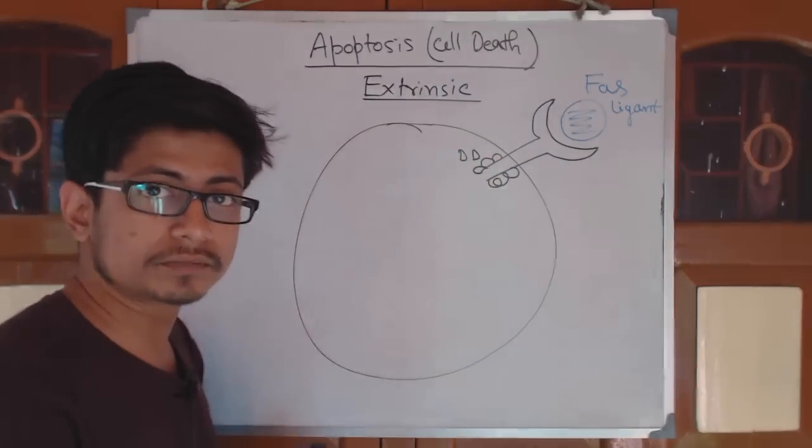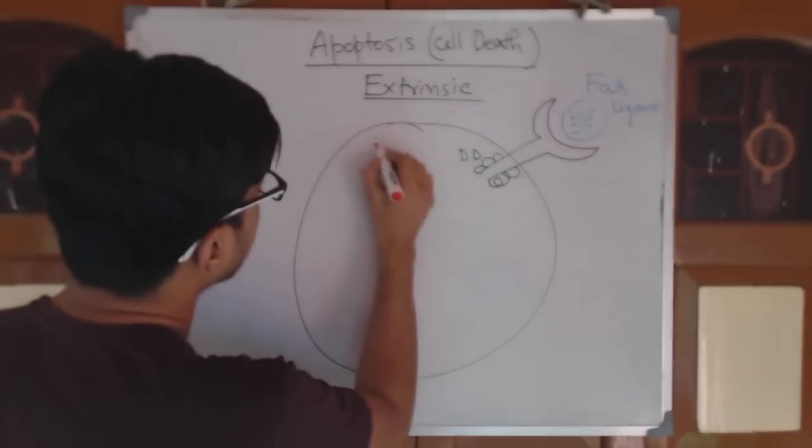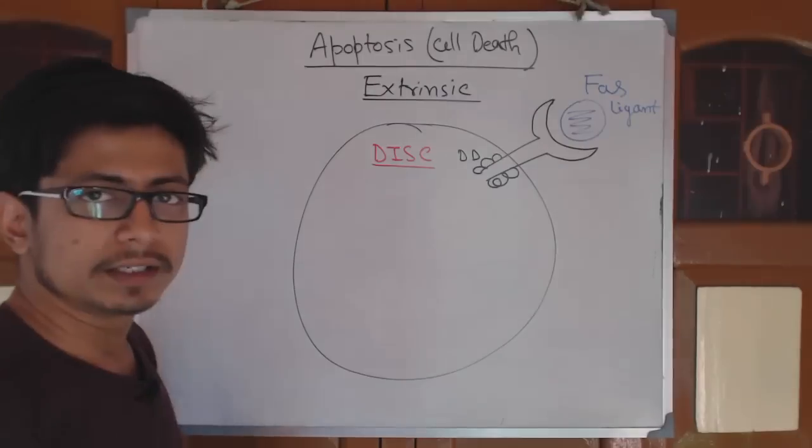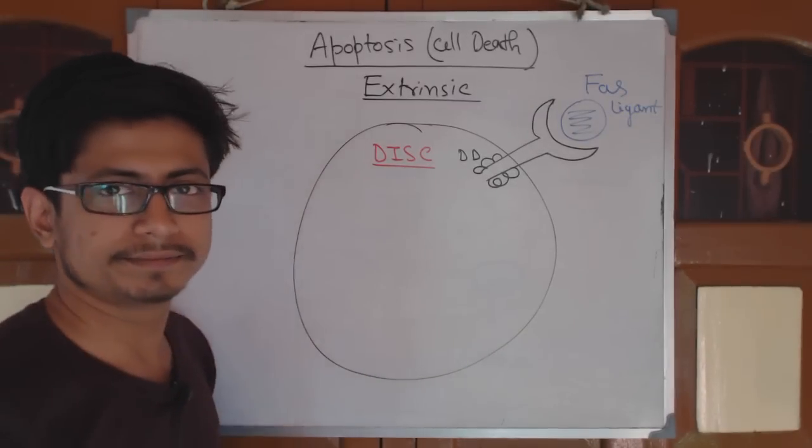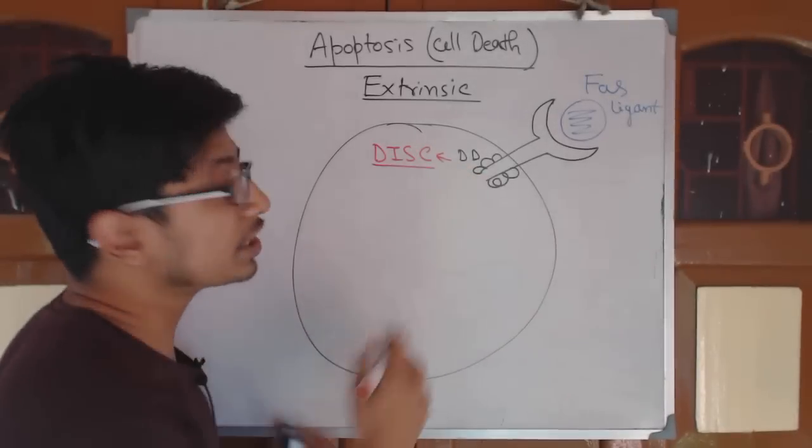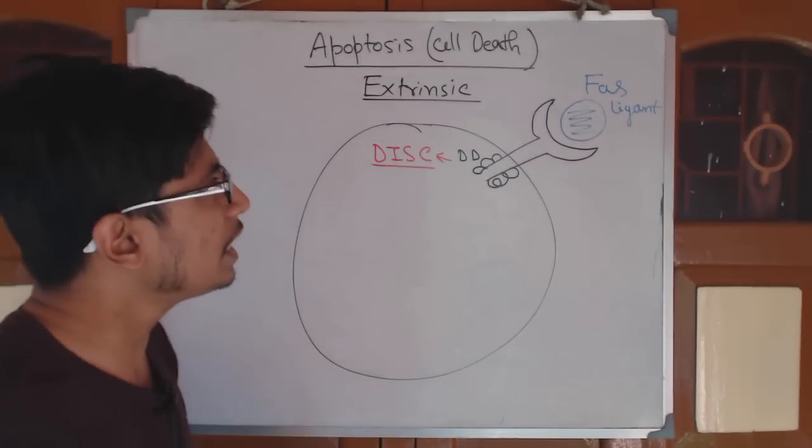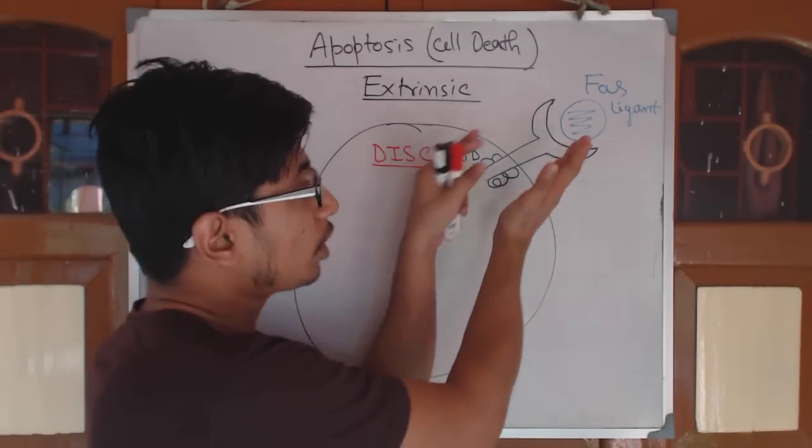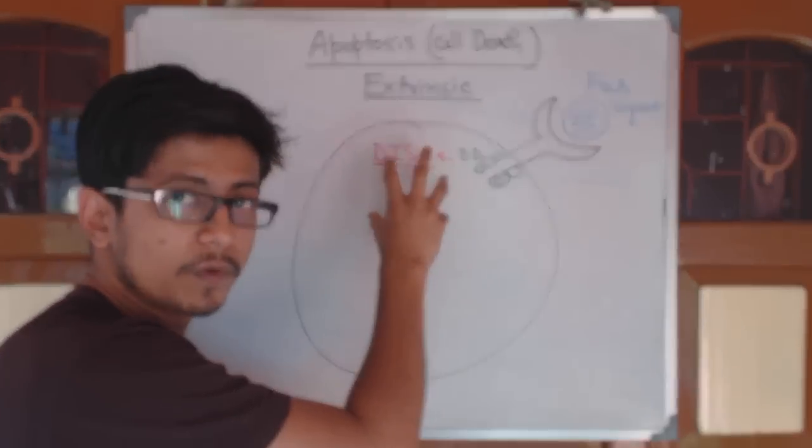The death domain gets activated due to the accumulation of multiple receptors in close proximity with each other. Many death domains will close together, interacting with themselves and forming a death domain signal. This death domain signal is known as DISC: death-induced signaling cascade. The DISC starts to form due to the accumulation of death domains with the receptors. Once the FAS ligand is coming, not only one receptor but multiple receptors will come together. Then this DISC will form.